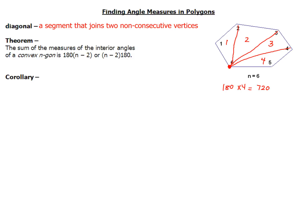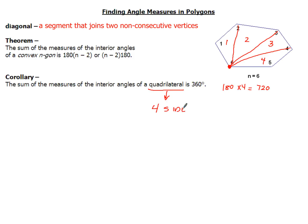There's also a corollary to that theorem which says that the measure of the interior angles of a quadrilateral is 360 degrees. One of the things you have to remember is that a quadrilateral has four sides. So in any four-sided figure, if you add up all four interior angles, they will add up to 360.